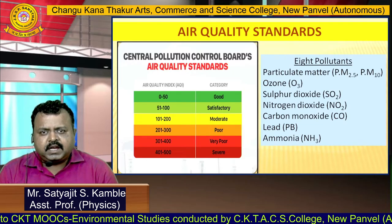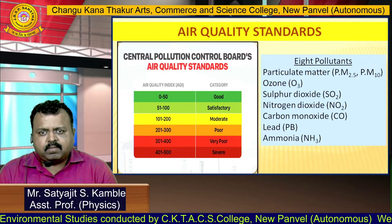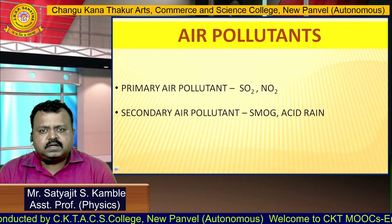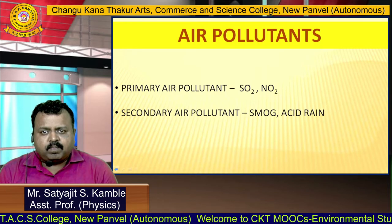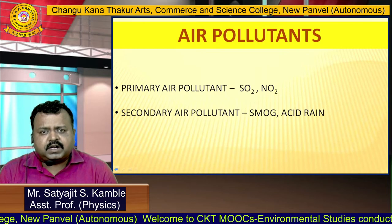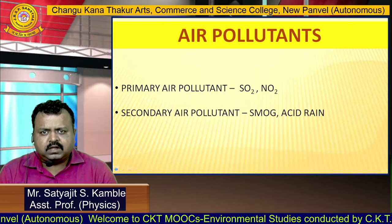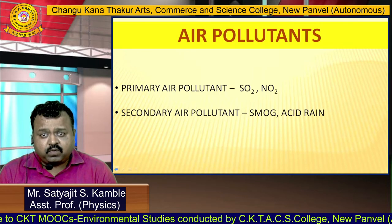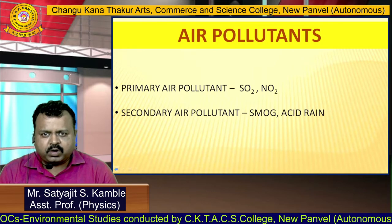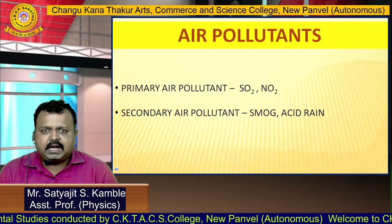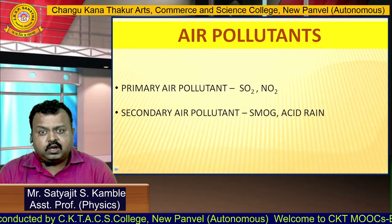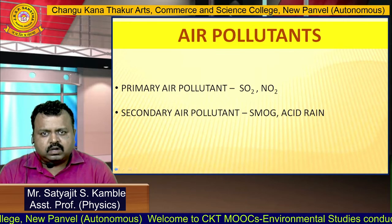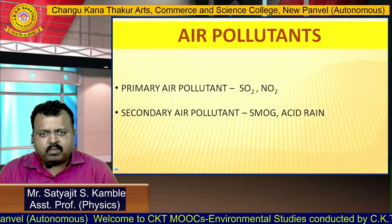Air pollutants can also be classified into two other categories: primary air pollutants and secondary air pollutants. Primary air pollutants are those which are directly released from industry, like sulfur dioxide and nitrogen dioxide. Secondary air pollutants are those which are formed after a reaction involving primary air pollutants. For example, when sulfur dioxide and nitrogen dioxide mix with rain, a new compound is formed known as acid rain. Similarly, when smoke mixes with fog, a new compound is formed — that is smog.